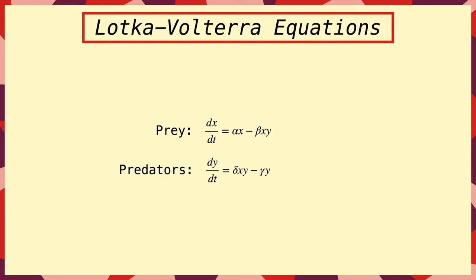Firstly, for the prey, which we'll label x, there's a term alpha x. Here alpha is just a constant, and this term represents new young being born, and it says that the population would grow exponentially if there were no predators.